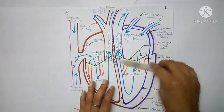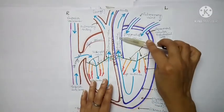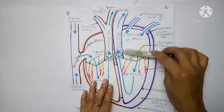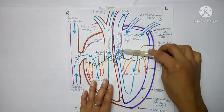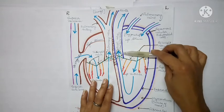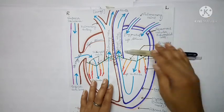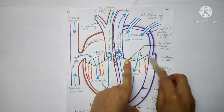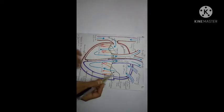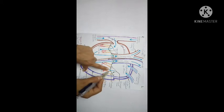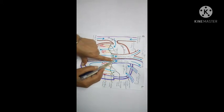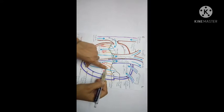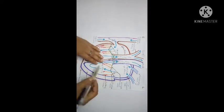The aorta is the vessel that distributes blood throughout the entire body. Here, an aortic valve is present — it is called the aortic valve in the aorta, and we also call it the semi-lunar valve, because its shape resembles half a moon. These valve cusps open and close accordingly.